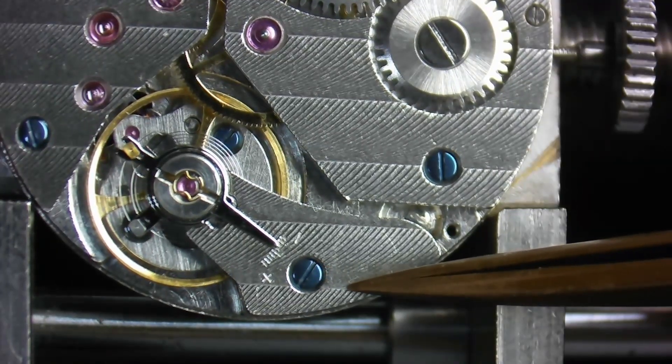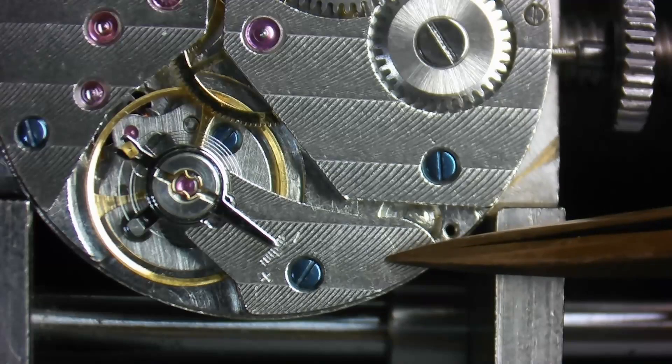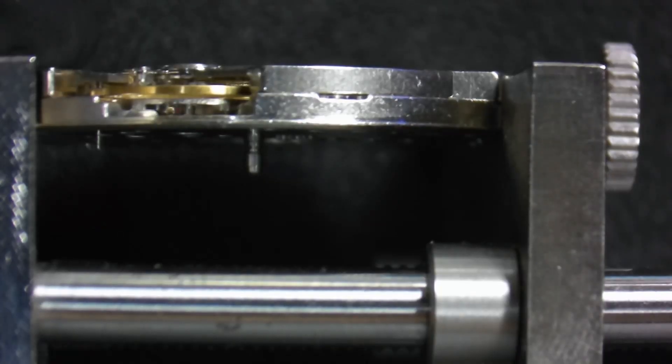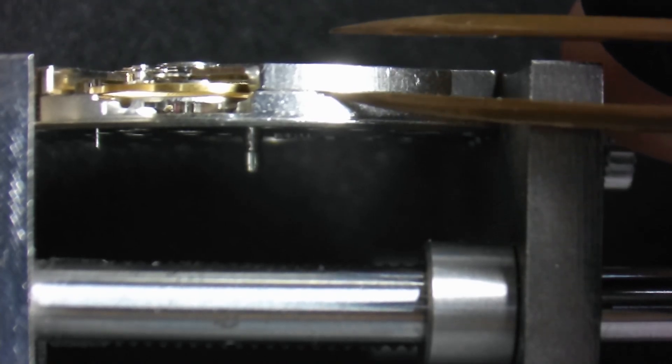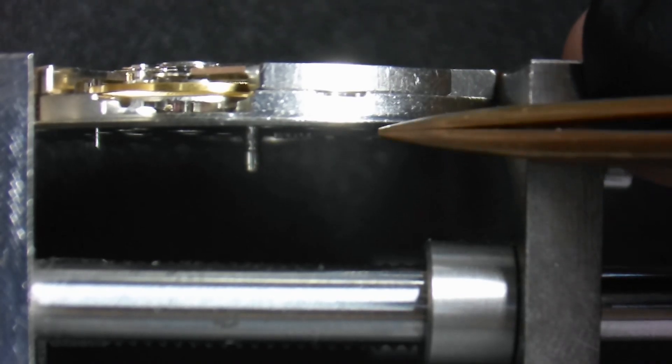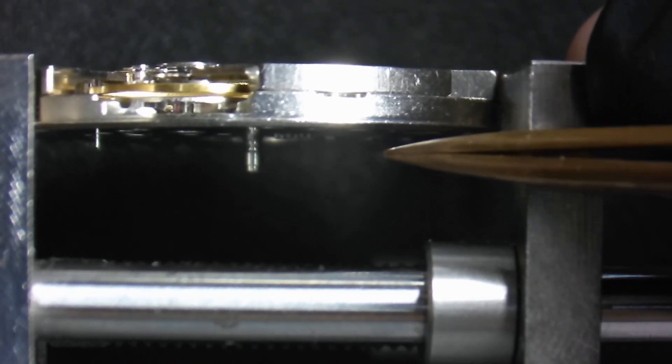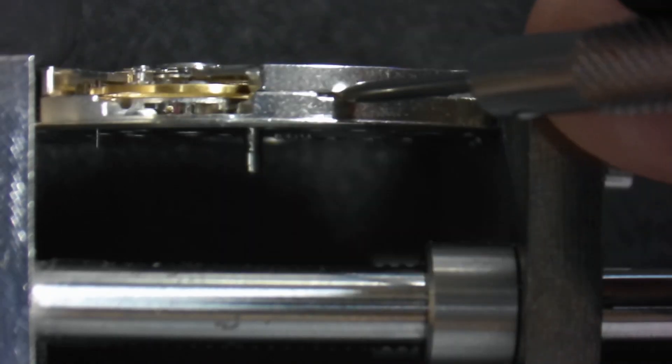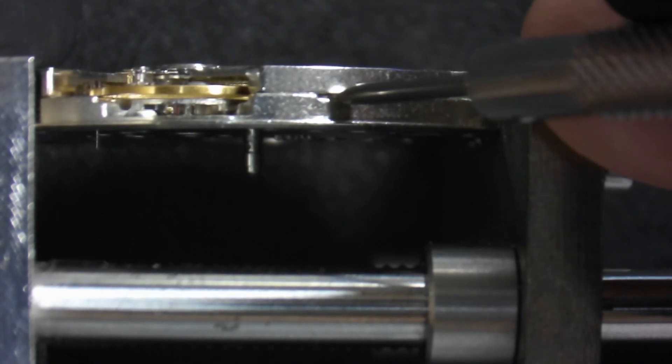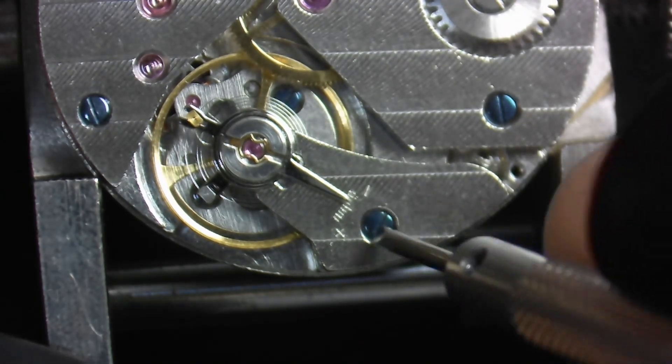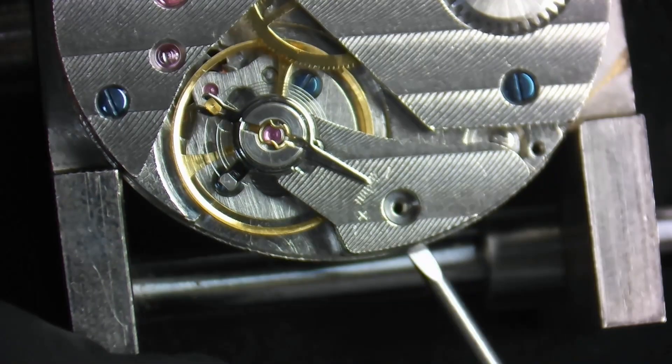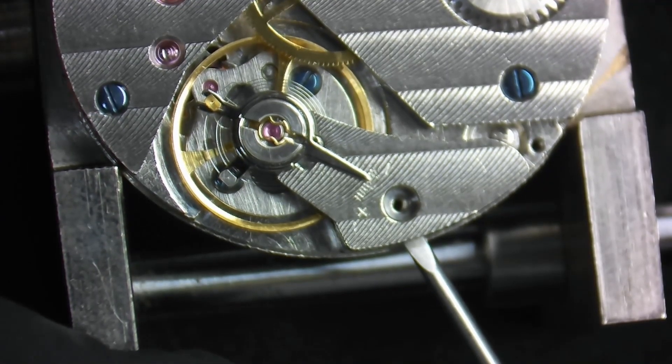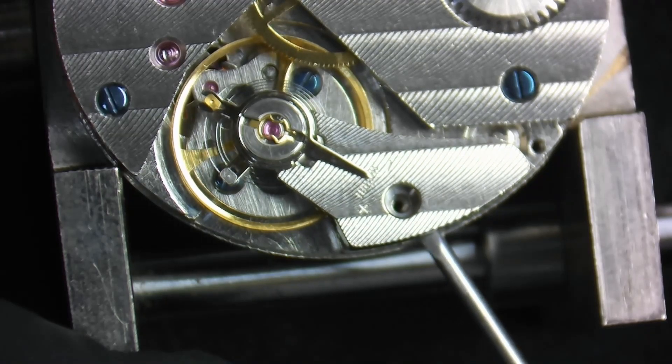Now the balance is held in by one screw and a couple steady pins under the balance cock. Before you remove the balance, look for the slot between the balance cock and the main plate. Since steady pins provide the tight alignment that a balance cock needs, you probably won't be able to get your tweezers between them. Part of learning the process is knowing what not to do. This is where you can insert your screwdriver to separate the balance cock from the main plate. So let's go ahead and remove the screw. Insert your screwdriver into the slot and just give it a slight twist to separate the balance cock from the main plate.